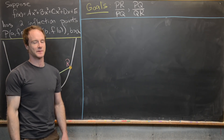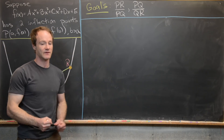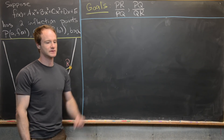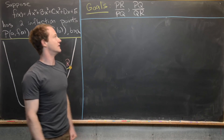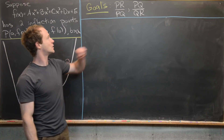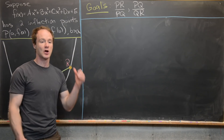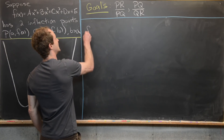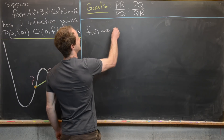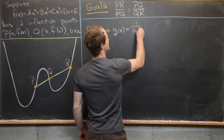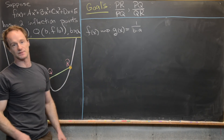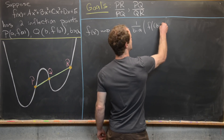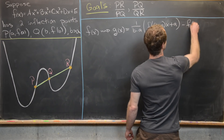Now I'm going to apply a similarity transformation to the plane, which stretches the plane in all directions by the same factor. The absolute distance between two points will change, but the ratio of distances will not change. So we can calculate these ratios in our new simplified setup, and the same ratios will hold in the original. We replace F(x) with G(x) = (1/(B−A)) · [F((B−A)x + A) − F(A)].